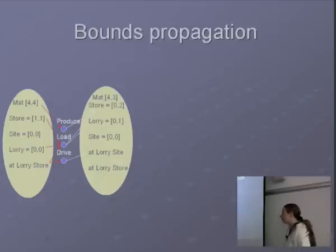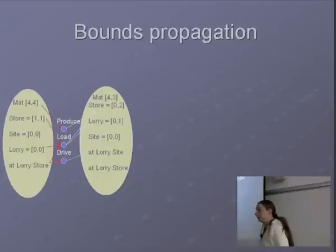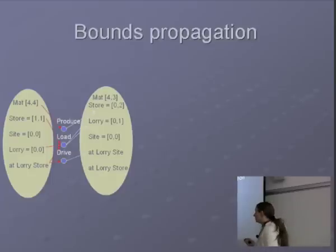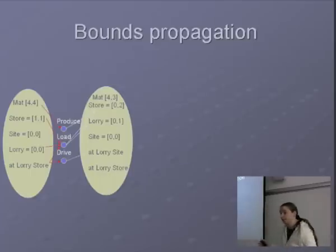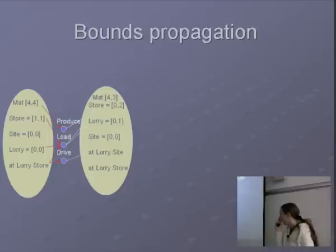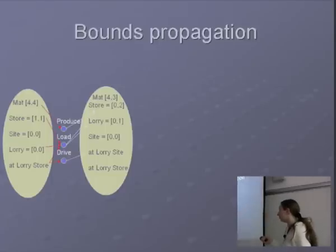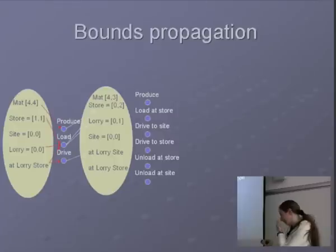At the next layer, we can produce. Now 'produce' uses up one unit of material and produces one package. So after we've done produce, the material can either be four — because we could have not done anything, so that's its upper bound still — or it can be three, if we've produced something, taking the material down by one. And this carries on the same for all the other things. So at the store we have one to one; we can load onto the lorry, and the lorry then has the bounds zero to one: one if we loaded, zero if we did nothing.